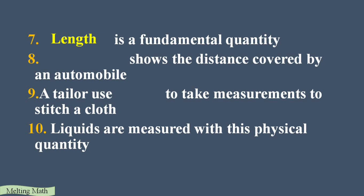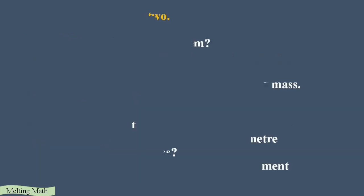Eighth: the instrument that shows the distance covered by an automobile is called an odometer. Ninth: a tailor uses a measuring tape to take measurements to stitch a cloth. Tenth: liquids are measured with which physical quantity — liquids are measured in liters, so liter is the correct answer.